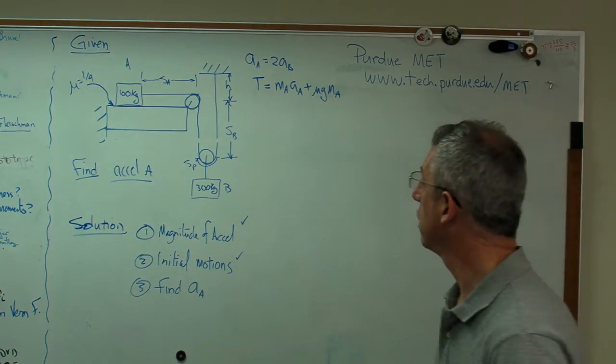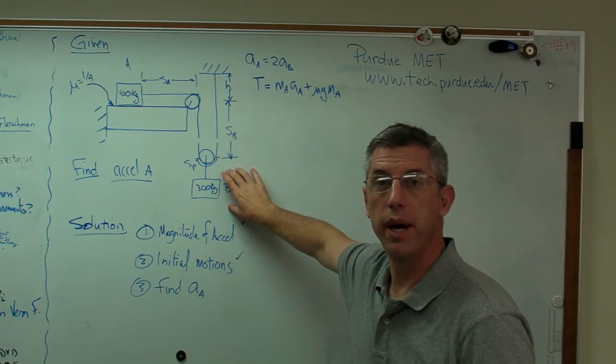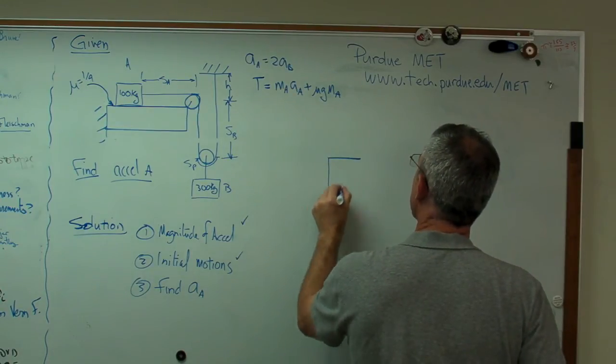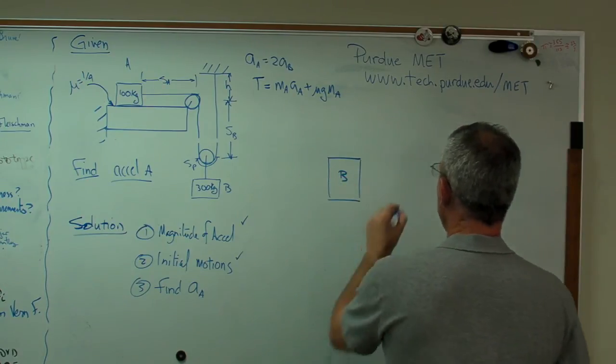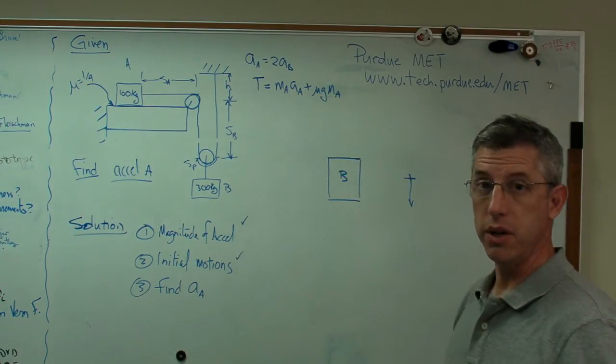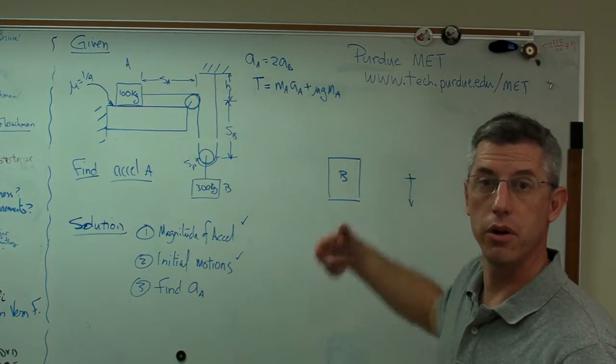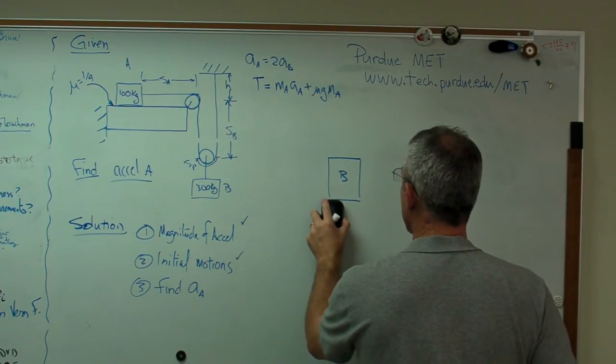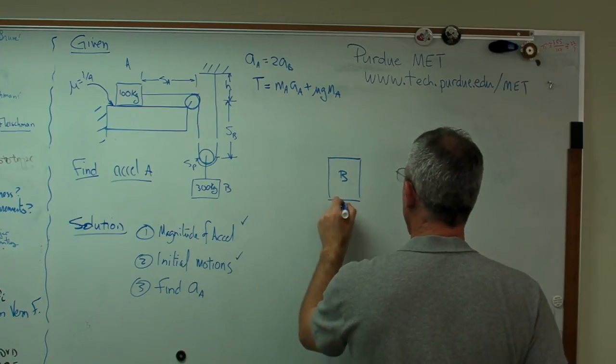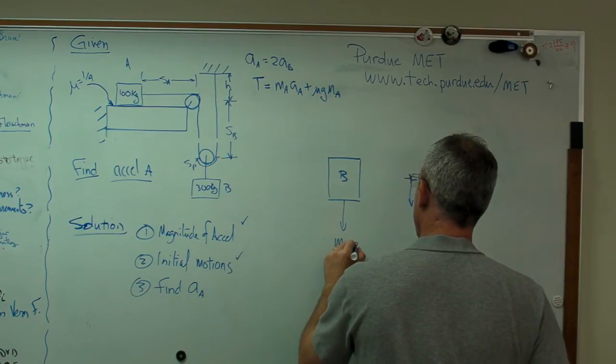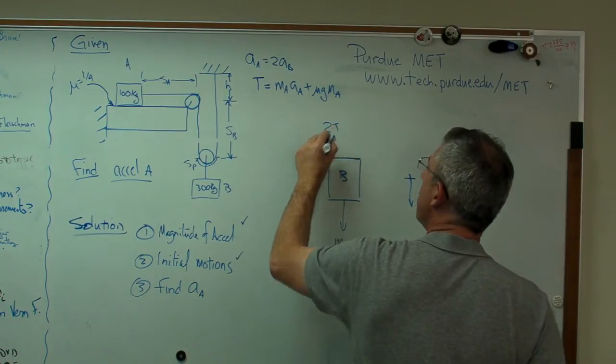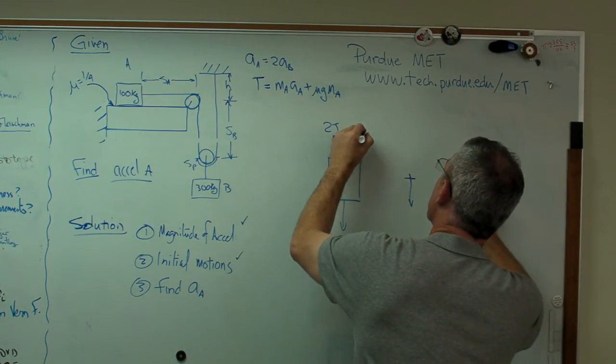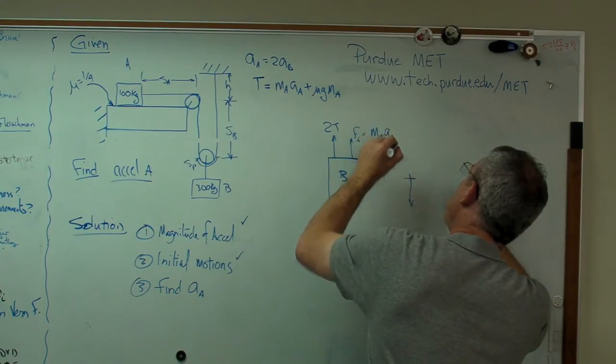Last two things to do, we're going to write the dynamic equilibrium for mass B, and then we're going to solve this set of equations that we've come up with. Here's mass B. I know the initial motion is down. Because I know the initial motion is down, that means the inertial force is going to go up. Inertial forces act opposite to the direction of acceleration. There's only one force down. That's weight. MB G. That's going to be 2T. That's the two sides of that rope that are pulling up. And the inertial force, which is MB AB.